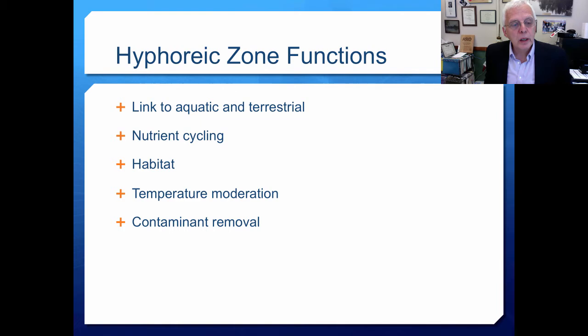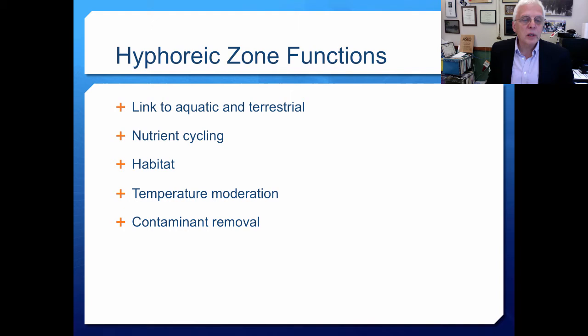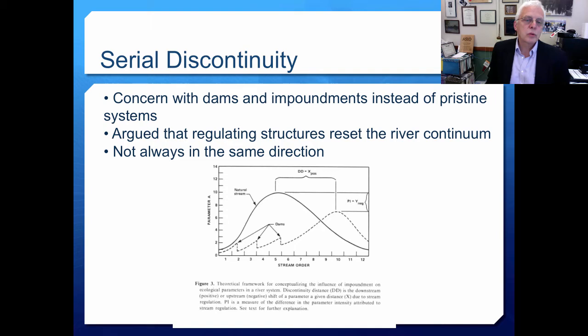Just as the hypolimnion of lakes moderates temperature by staying at roughly the same temperature year-round in deep water, the hyporheic zone moderates temperature fluctuations in streams. Hyporheic zones have also been shown to be able to remove contaminants, because of their ability to cycle material and the long contact time between biology and water.